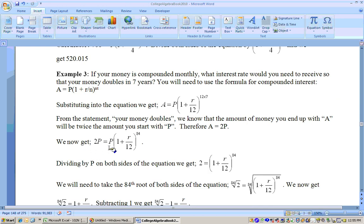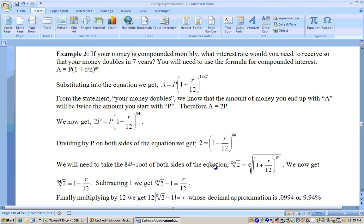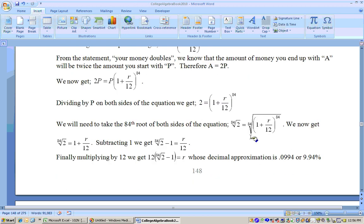Now, what I can do at this point is divide both sides by the P, and that eliminates the P, and I'm just down to this equation right here. Now, I need to get r, and I need to get rid of this 84th power. So to get rid of the 84th power, take the 84th root of both sides. Well, the 84th root cancels out the 84th power, so I end up with the 84th root of 2 is equal to 1 plus r over 12. The 84th power is gone. Now, I just subtract 1, and then finally get rid of the divide by 12 by multiplying by 12.